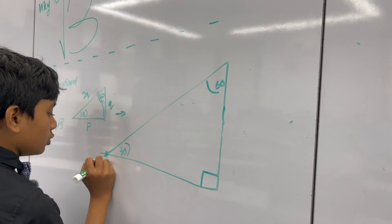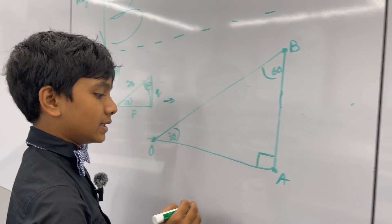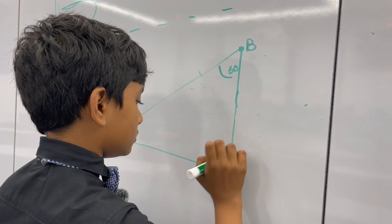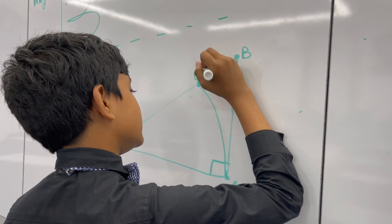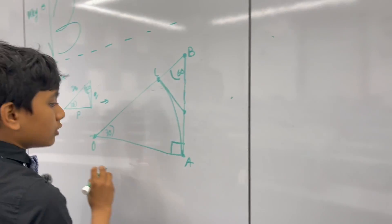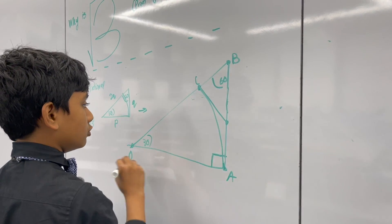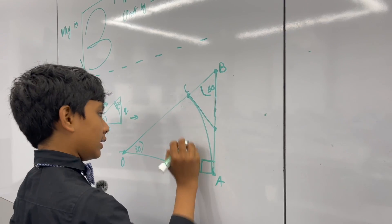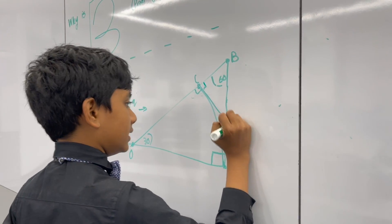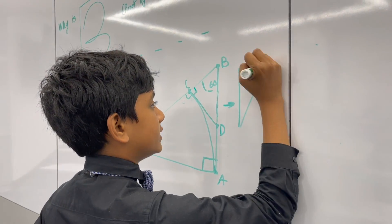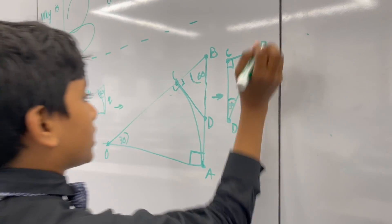Let's call this point O, this A, and this B. I call it O because I want you to imagine it as the center of a circular arc. The arc cuts at point C. Now I'm going to draw the tangent to this arc at C — which is obviously perpendicular to OB — and call that intersection point D. We now have another smaller 30-60-90 triangle, BCD.